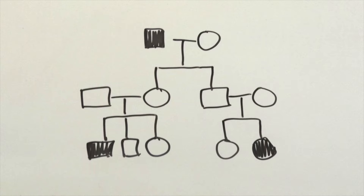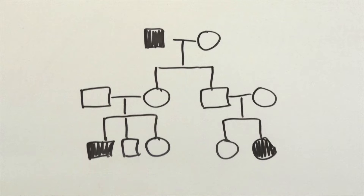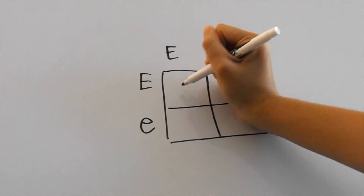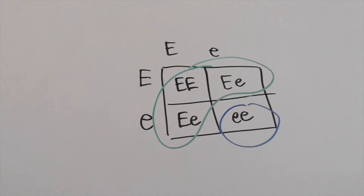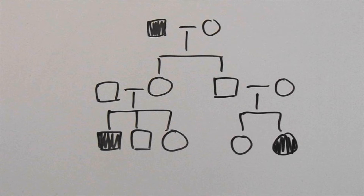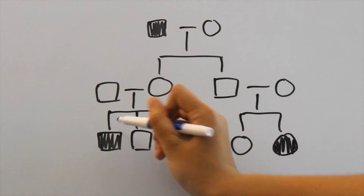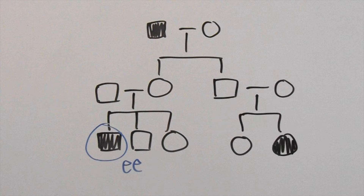There aren't any genotypes shown here, just colored in or blank shapes. We can see that the parents don't have an attached earlobe but one of their children does. If the parents were hybrids — each with one dominant earlobe allele and one recessive earlobe allele — when we solve the Punnett square, three children have the dominant phenotype like the parents and one child has the recessive phenotype. We know that attached earlobes are recessive because the child has a recessive genotype, shown by his colored-in box.